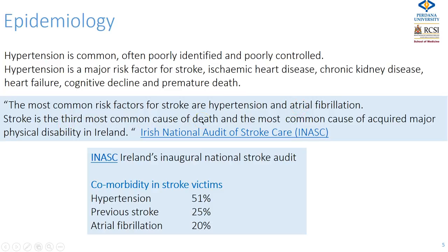Stroke is the third most common cause of death and the most common cause of acquired major physical disability in the country, making identifying and controlling blood pressure very important. In the INASK study in Ireland, the leading comorbidities in stroke victims were hypertension in 51%, previous stroke in 25%, and atrial fibrillation in 20%.